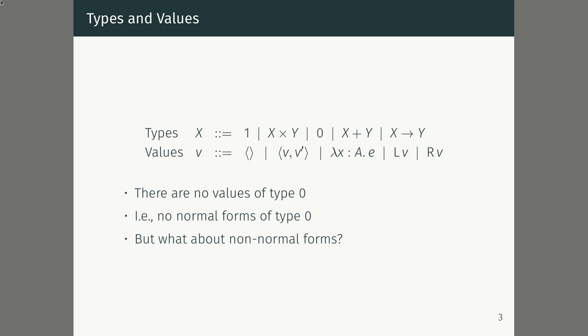Remember what the simply typed lambda calculus looked like. We had a collection of types — unit, products, the empty type, disjoint union, and functions — and a collection of values: the unit value, pairs of values, lambda abstractions or function values, and left and right injections into the sum type. One thing you'll notice is we have a value for every type except the empty type. We have no values of type 0, which means we have no normal forms of type 0.